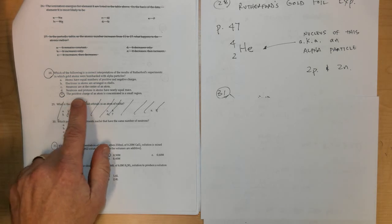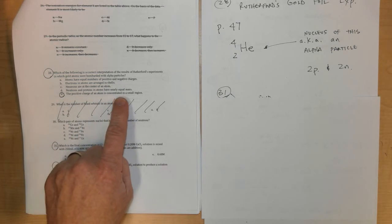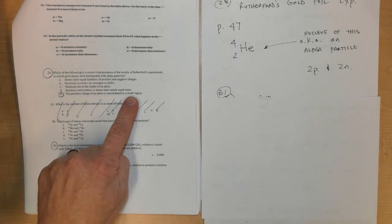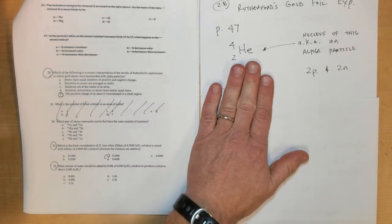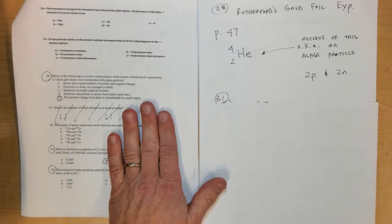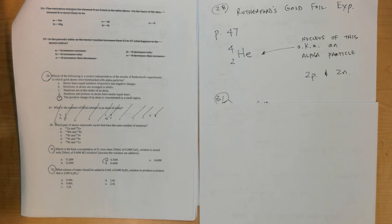The answer would be E because the positive charge of an atom is concentrated in a small region called the nucleus, and this was the first experiment that showed that atoms had dense positively charged centers called nuclei.